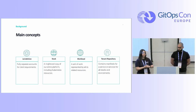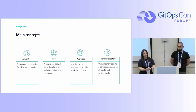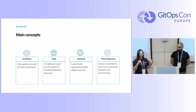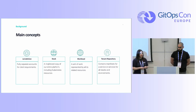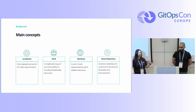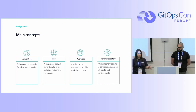Let me set a few main concepts before we show you our environments. We have jurisdictions, which are fully separate accounts for data isolation and location. Then we have stacks, which are ring-fenced, isolated copies of our entire platform — they contain all of the same services but give isolation between stacks. A workload is a unit of work represented by all of its resources, for example a service and all of its related infrastructure. And then we have the tenant repository, which contains manifests for all of the services in all of the environments.